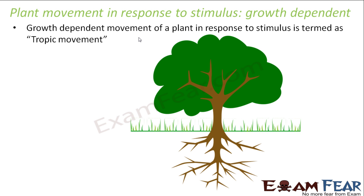Growth dependent movement of a plant in response to a stimulus is termed as tropic movement. This kind of movement happens because the plant is growing. These movements are also of different types based on what kind of stimulus is there. Such growth dependent movements are generally directional. For example, you would have seen that the roots always grow downwards and the shoot always goes upward, following a particular direction.